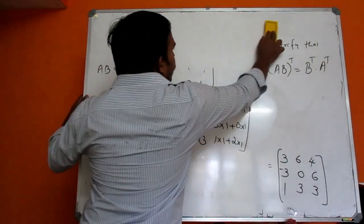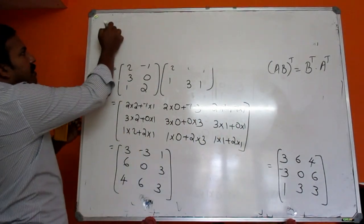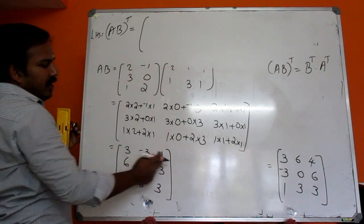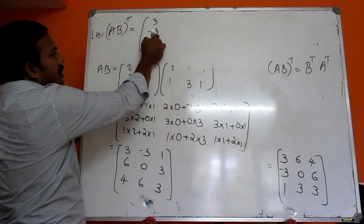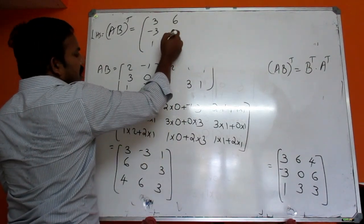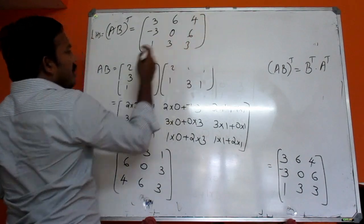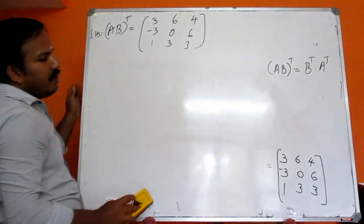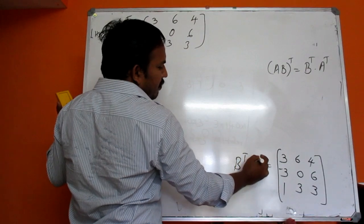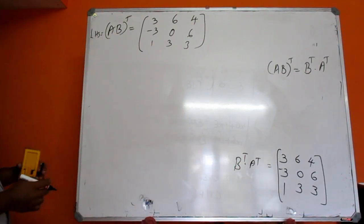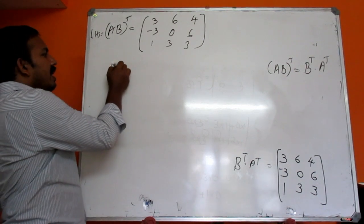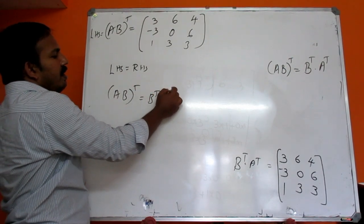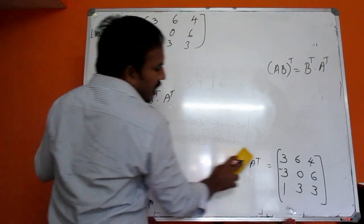We have AB transpose — that is the LHS. LHS is computed the same way; we will transpose it by swapping rows and columns: 3, minus 1, 3, then 6, 7, 3, then 4, 6, 3. After transposing, AB transpose equals B transpose into A transpose — LHS equals RHS. That is AB whole transpose equals B transpose into A transpose, verified.